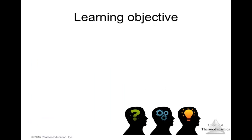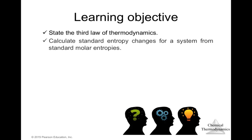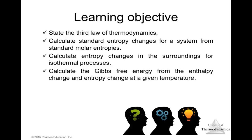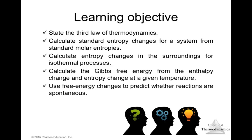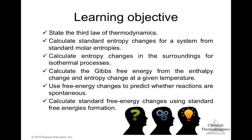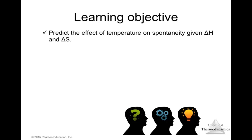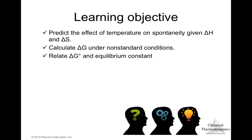By the end of this module, you'll be able to state the third law of thermodynamics, calculate standard entropy changes for a system from standard molar entropies, calculate entropy changes in the surroundings for isothermal processes, calculate Gibbs free energy from enthalpy and entropy changes at a given temperature, use free energy changes to predict whether reactions are spontaneous, calculate standard free energy changes using standard free energies of formation, predict the effect of temperature on spontaneity given ΔH and ΔS, calculate ΔG under non-standard conditions, and relate ΔG° to the equilibrium constant.